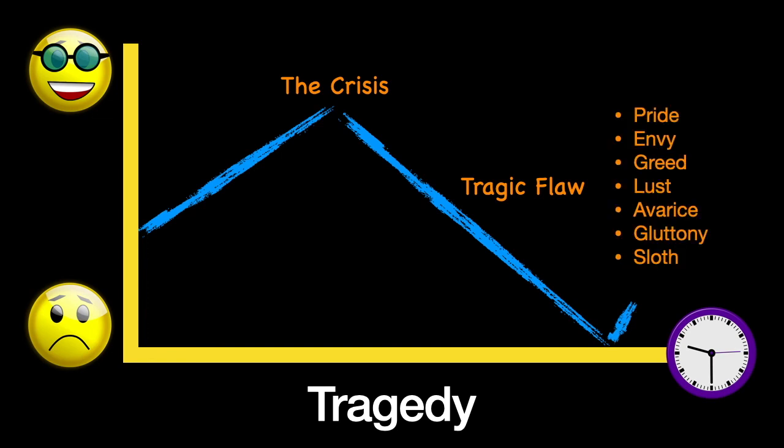The crisis — the one action that determined the future course for Macbeth — was when he decided to kill Duncan and take the throne. Then there are lots of things bringing him down after that, all related to the tragic flaw. You could attribute pride, envy, greed, lust, or avarice to a guy like Macbeth. That's the difference between a classical tragedy such as Shakespeare would write and just a sad story: the main character has to be brought down because of his own tragic flaw.